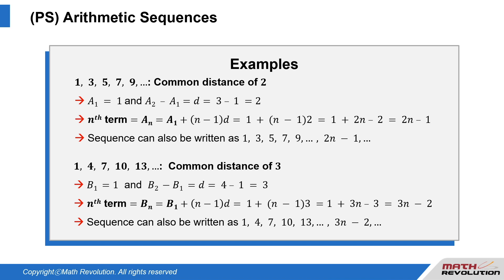The nth term equals a(n) equals a(1) plus (n−1) times d equals 1 plus (n−1) times 2. So the sequence can be written as 1, 3, 5, 7, 9, and so on until 2n minus 1, and so on.